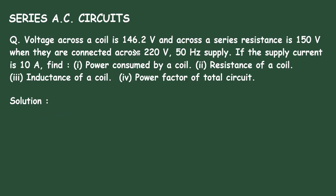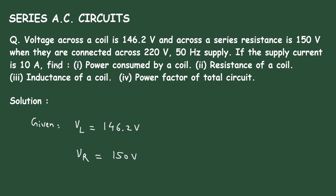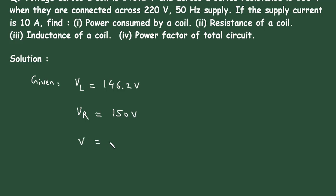Solution. First of all we will write what is given. Voltage across the coil VL is equal to 146.2V. Voltage across the series resistance Vr is equal to 150V. Supply voltage V is equal to 220V. Frequency F is equal to 50Hz. Supply current I is equal to 10A.